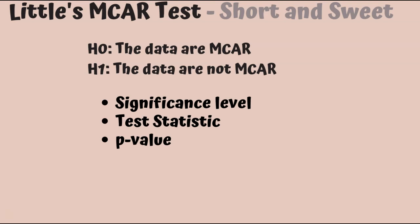Like any other hypothesis test, you'll need to set a significance level for your test. Typically, the default is five percent. You'll need to calculate a test statistic, but this will be done by software. And using the test statistic, you can generate a p-value. And if the p-value is smaller than your significance level, you reject the null hypothesis. So, there is some association between the missingness patterns and the observed data. So, your data is likely to be missing at random or it could even be missing not at random.